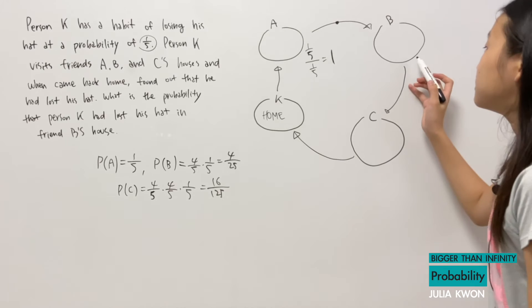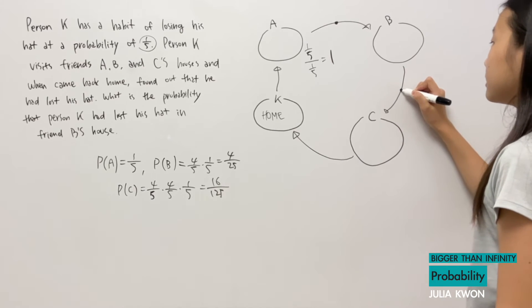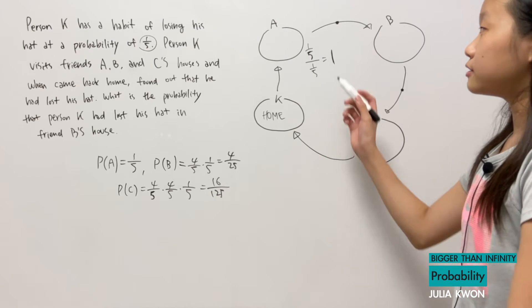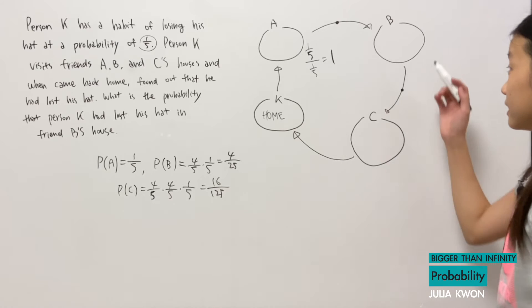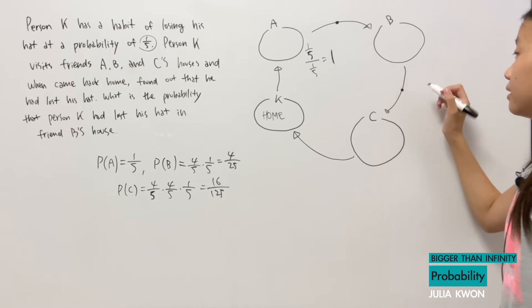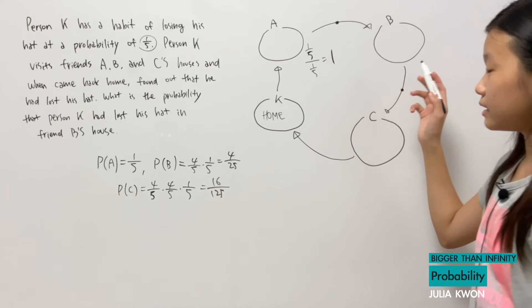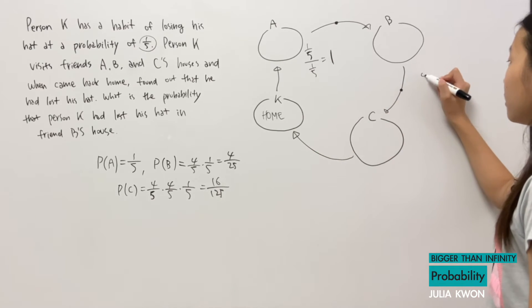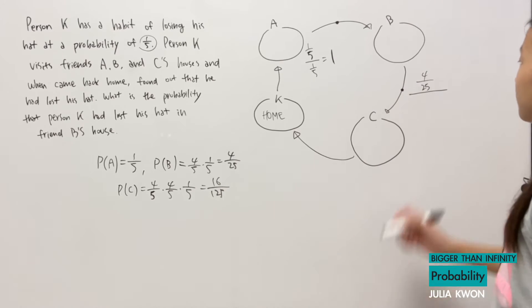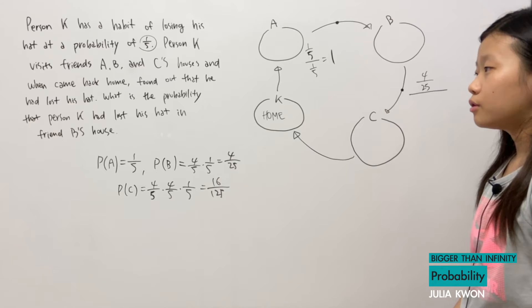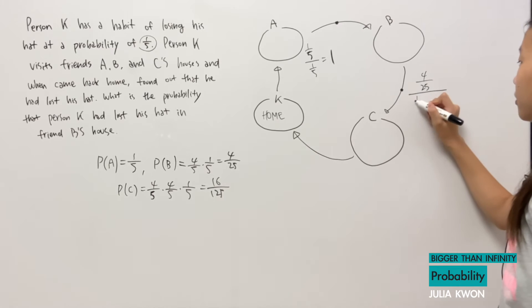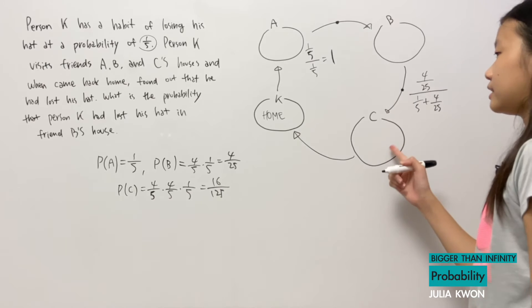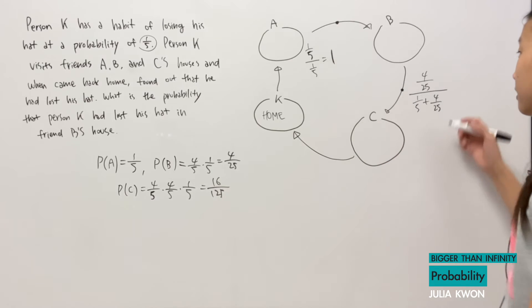And now, if he was going from house B to C here, and then he realized that he forgot his hat in either house A or B, and he thinks, what is the probability that I lost my hat in house B? Then that would be the probability of losing his hat in house B, which is 4/25, divided by the total probability that he will lose his hat, which would be 1/5 plus 4/25. He didn't get to house C yet, so there is no way that he lost his hat in house C, right?